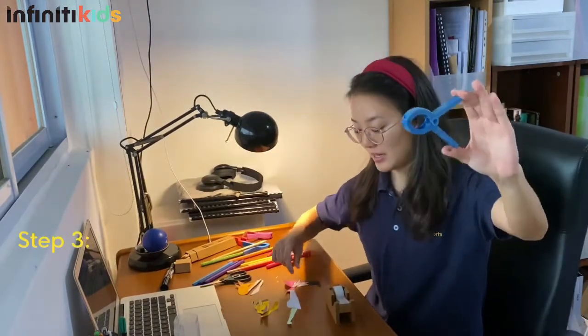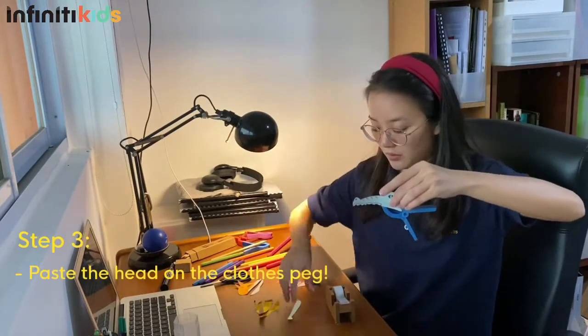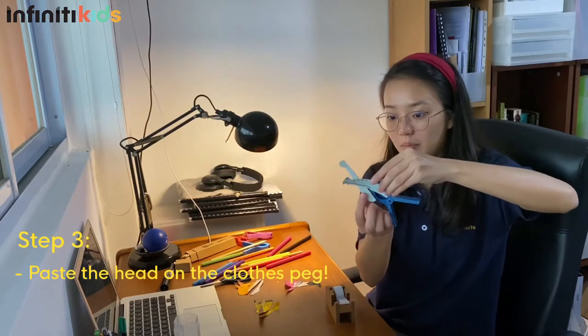Next step, you're going to get a clothes peg and then you're going to paste one part on the top and then one part at the bottom.